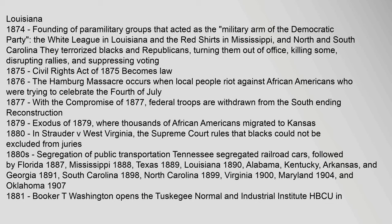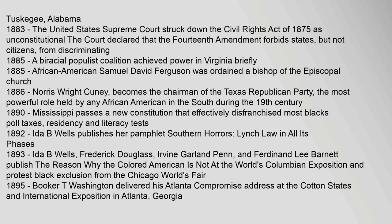In 1881, Booker T. Washington opened the Tuskegee Normal and Industrial Institute in Tuskegee, Alabama. In 1883, the U.S. Supreme Court struck down the Civil Rights Act of 1875 as unconstitutional, declaring that the Fourteenth Amendment forbids states, but not individual citizens, from discriminating. In 1885, a biracial populist coalition achieved power in Virginia briefly; and African American Samuel David Ferguson was ordained a bishop of the Episcopal Church. In 1886, Norris Wright Cuney became the chairman of the Texas Republican Party, the most powerful role held by any African American in the South during the 19th century. In 1890, Mississippi passed a new constitution effectively disenfranchising most blacks through poll taxes, residency, and literacy tests. In 1892, Ida B. Wells published her pamphlet Southern Horrors: Lynch Law in All Its Phases.